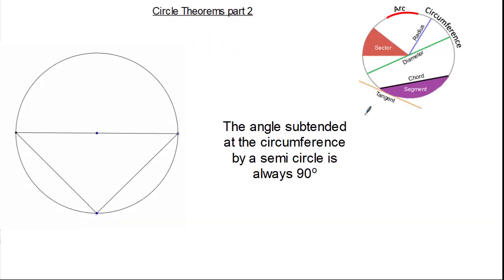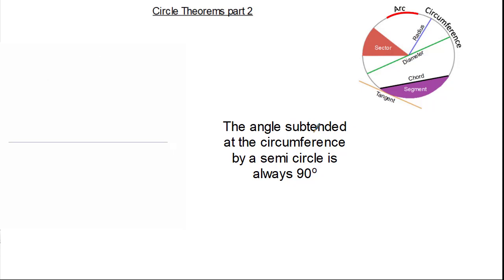So let's look at our next circle theorem. The circle theorem states the angle subtended at the circumference by a semicircle is always 90 degrees. Now 'subtended' is quite a tricky word to remember so let's focus on this first. Subtended means if we were to connect the extreme ends of any line we would create an angle. A nice little trick is to look at the word 'sub' meaning below — like a submarine going below water, think of the angle being formed below.